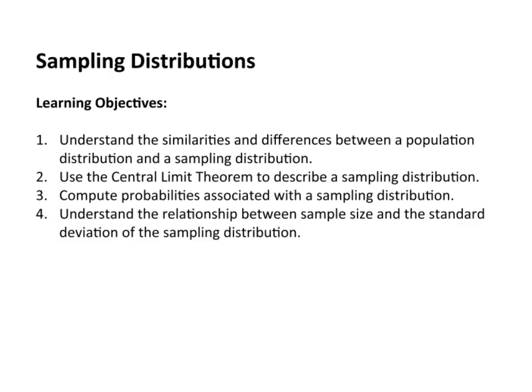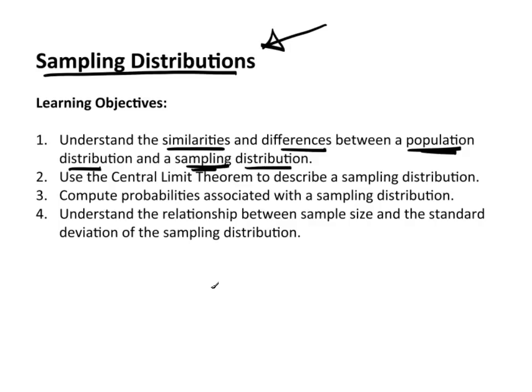Thus far in the course we've really laid the basic ground rules down to start getting into the way things are really done in the real world, and most of what's done in the real world is based on this concept of sampling distributions, which we could not begin to understand without everything we've already gone through. Now let's take a look at the learning objectives — first, we want to understand the similarities and differences between a population distribution and a sampling distribution. The whole key here is sampling distributions, and how they relate to each other is extremely important.